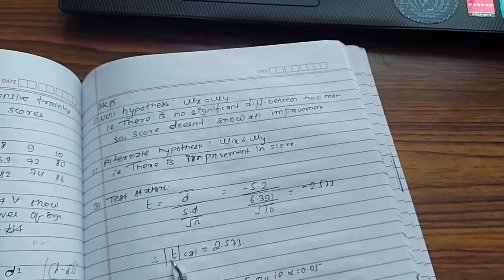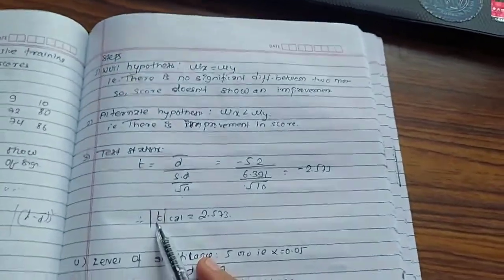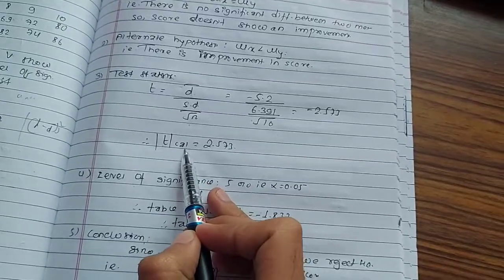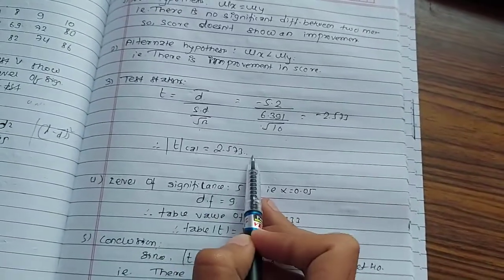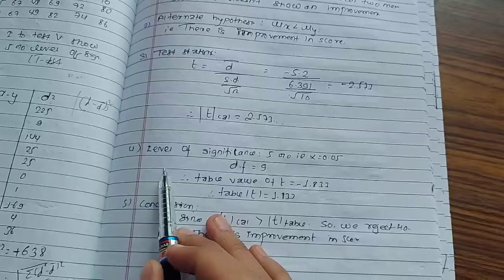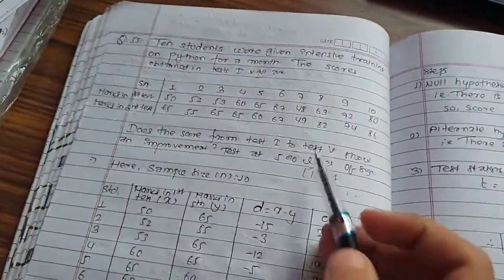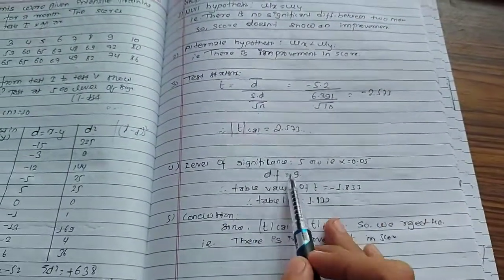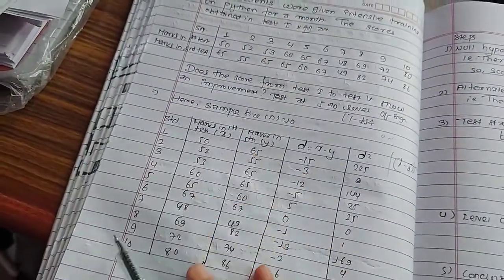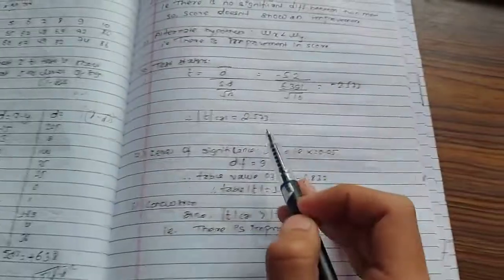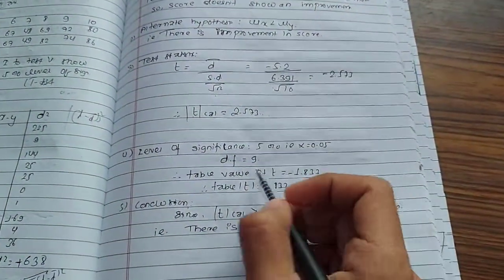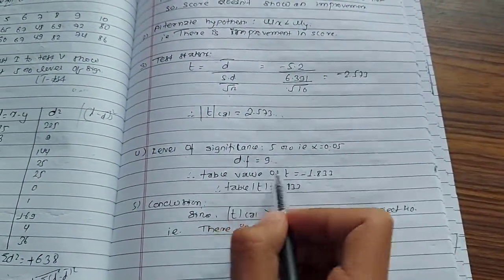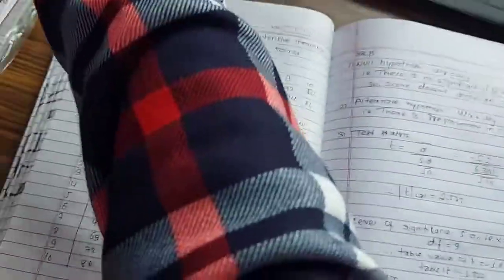t calculated value is minus 2.573. Negative value. The t calculated value of t is 2.573. Level of significance is 5%, which is 0.05. Degree of freedom n minus 1 is 10 minus 1 equals 9.